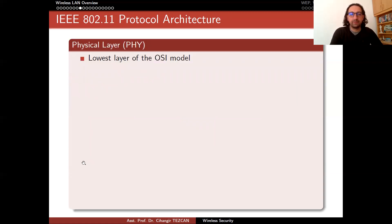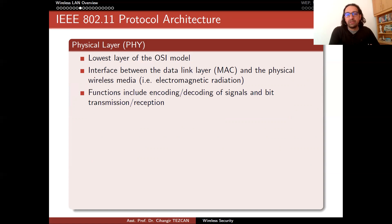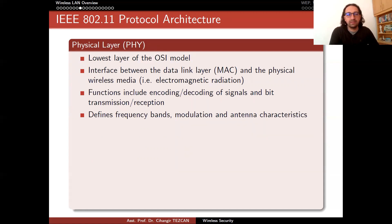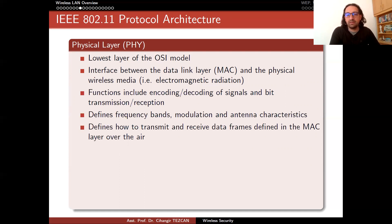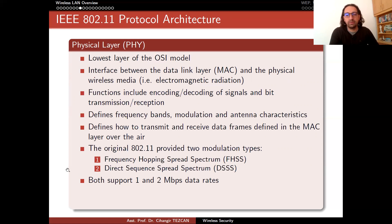The physical layer is the lowest layer of the OSI model. It interfaces between the data link layer (MAC) and the physical wireless media — electromagnetic radiation. Functions include encoding and decoding of signals and bit transmission and reception. It defines frequency bands, modulation, and antenna characteristics. It defines how to transmit and receive data frames defined in the MAC layer over the air. The original standard provided two modulation types: frequency hopping spread spectrum and direct sequence spread spectrum, both supporting one and two megabits per second data rates.